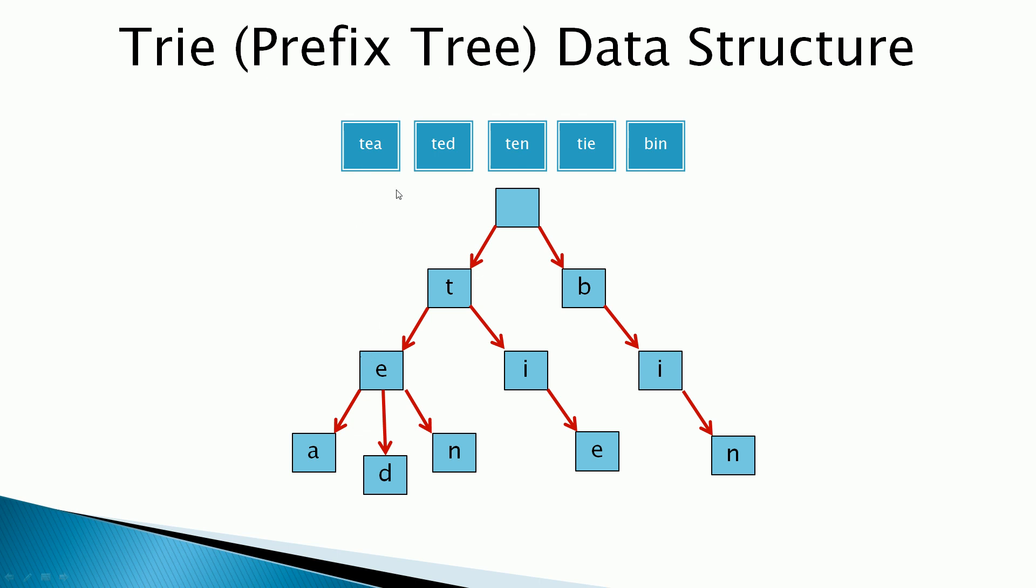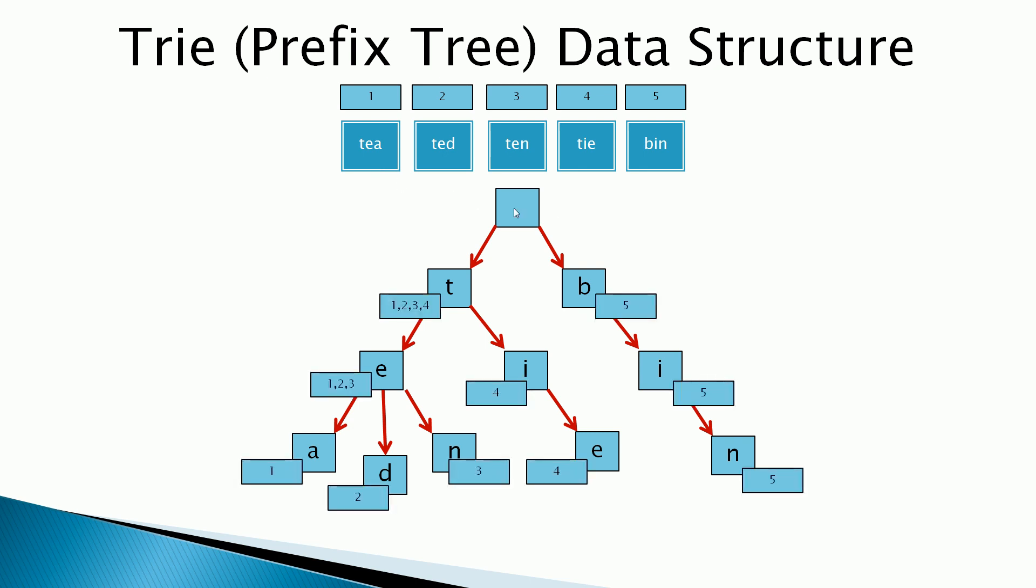And what would happen is, let's say that the first object, the first element has ID1, second has ID2, just making ideas up. So what would happen in this tree is, when you search for T-E, give me every single record that starts with T-E. So in this case, I will return record 1, 2, 3, and 4.